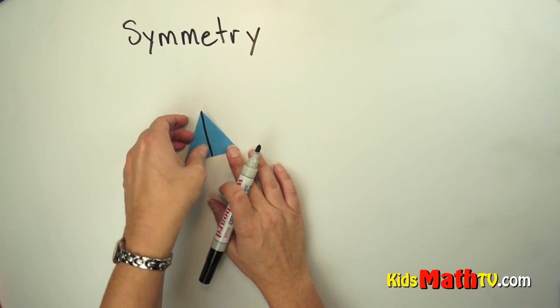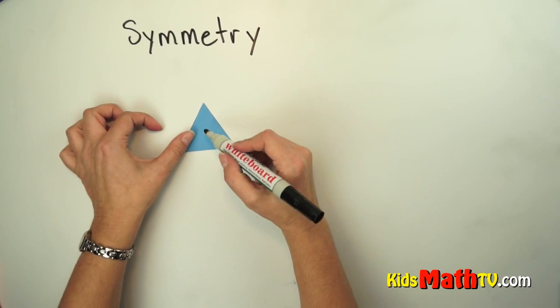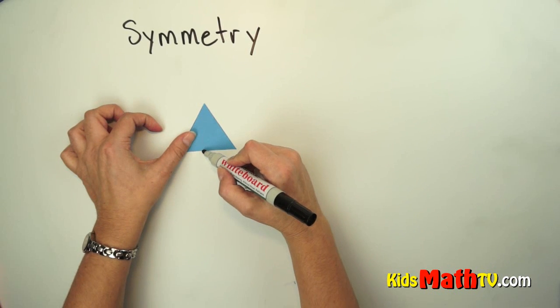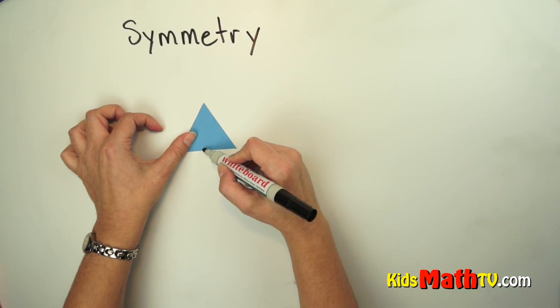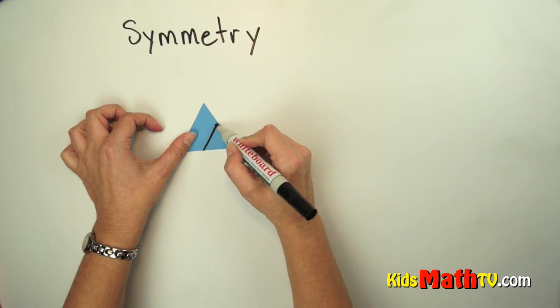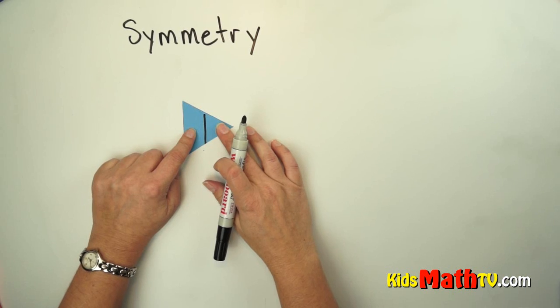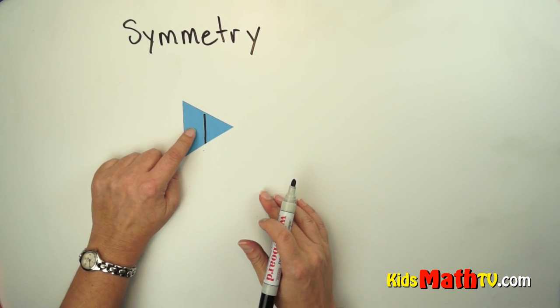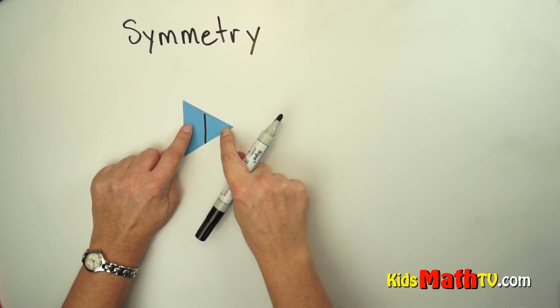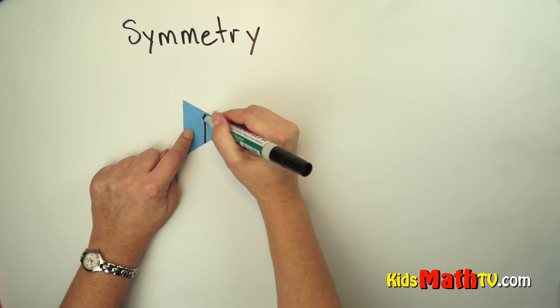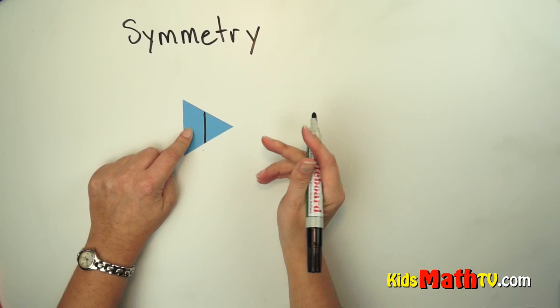However, if I were to take and draw a line this way, this shape is not the same shape and size as this one. So this is not a line of symmetry.